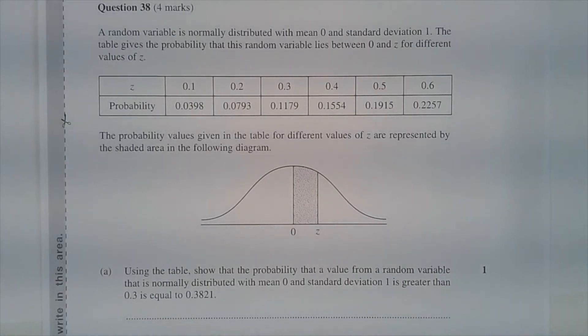Part A. Using the table, show that the probability that a value from a random variable that is normally distributed with mean 0 and standard deviation 1 is greater than 0.3 equals 0.3821.